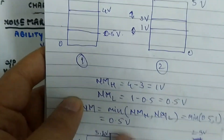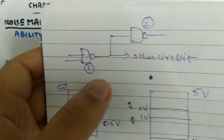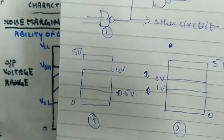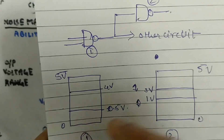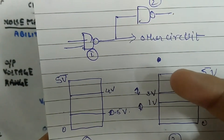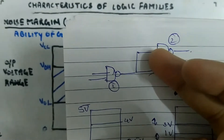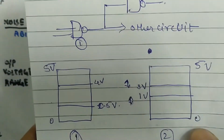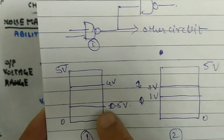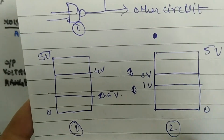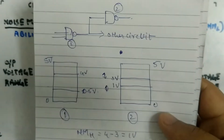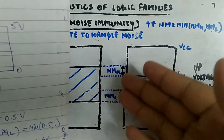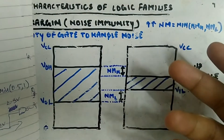A similar case applies for logic zero: if 0.3 V is output and noise pushes it up to 1.3 V at the input, that goes beyond the tolerable range of 0.5 V, landing in the indeterminate region. For calculating noise margin, you simply take the difference between the relevant voltage parameters.